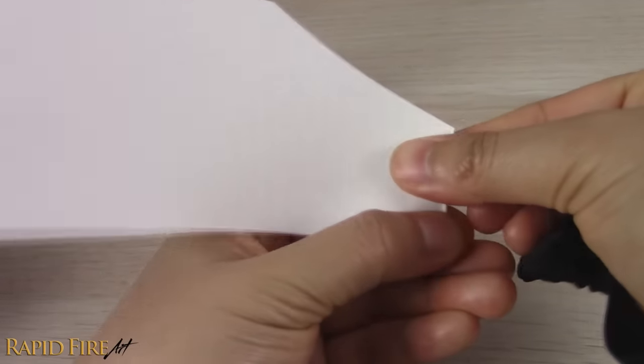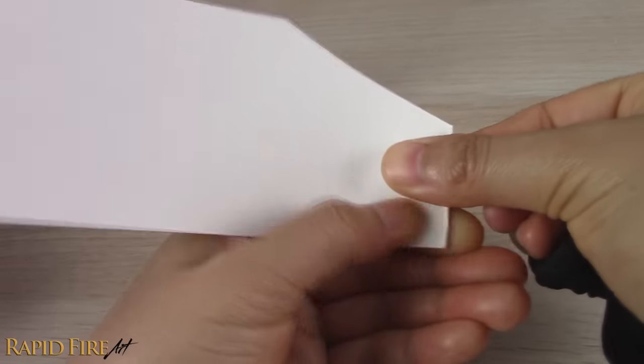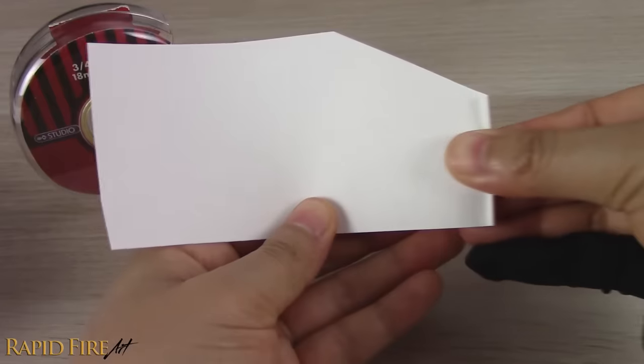Once you've got it under control, roll straight across to the other side, using the bottom edge of your paper as a guide.